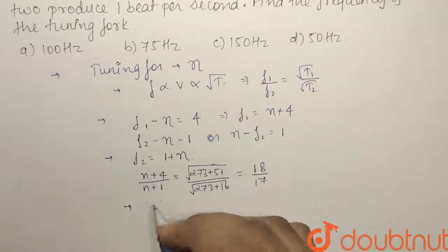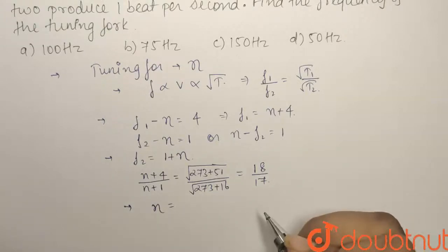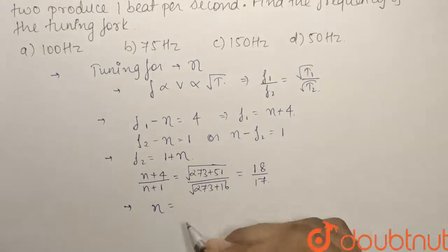From here solving what we get, our N comes, eta comes out as it will be equals to using ratio proportional, it will be equals to 50 Hertz.